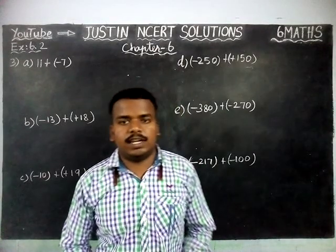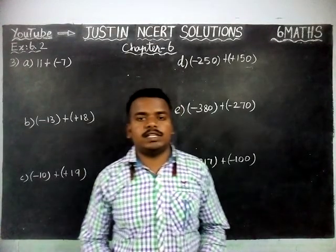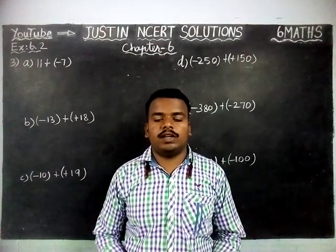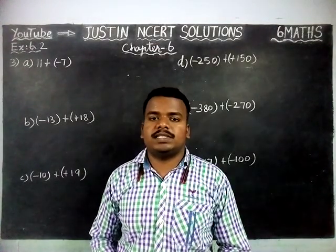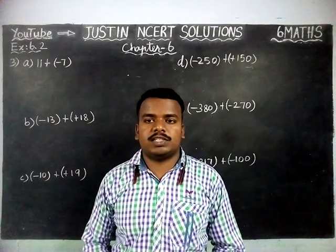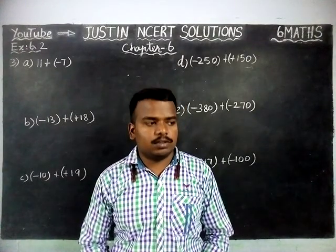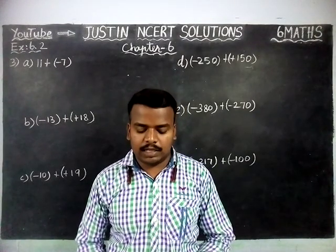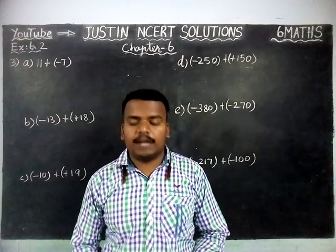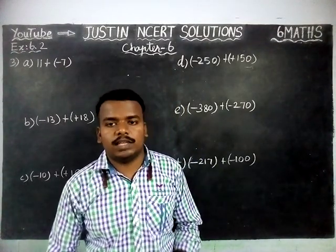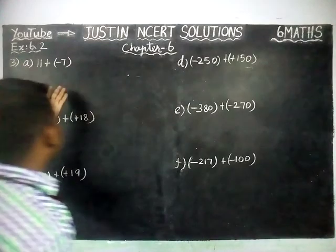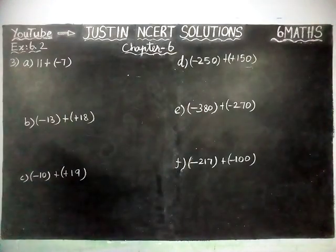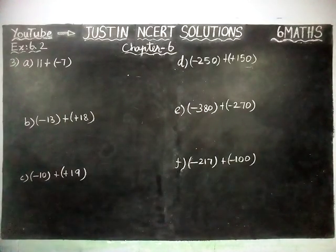Hi students, welcome to Justinian CRT Solutions. In this video we are going to see 600 math chapter 6 exercise 6.2 third question. The question is: add without using number line. We are given numbers and we are going to find the addition for the given integers.